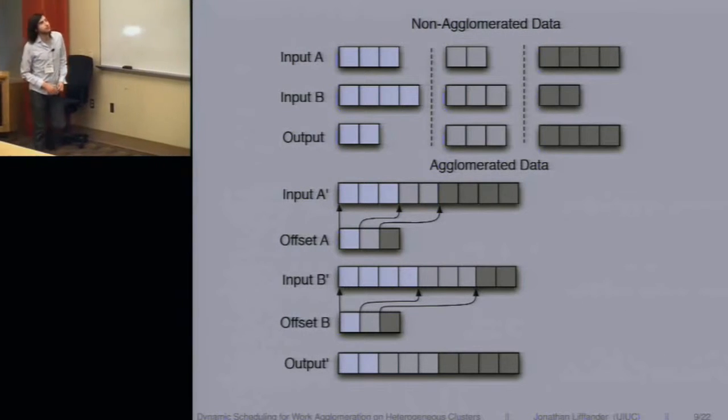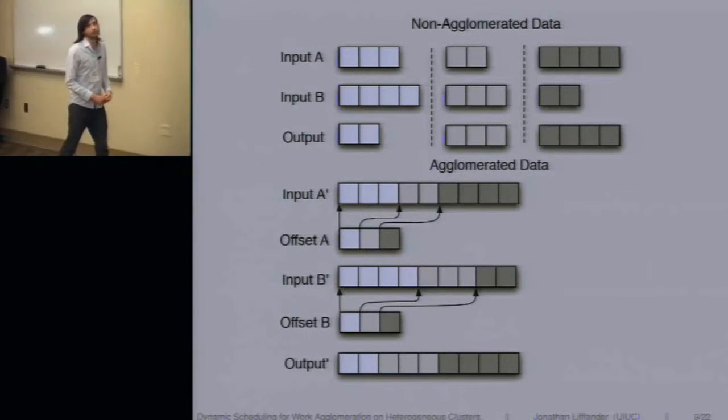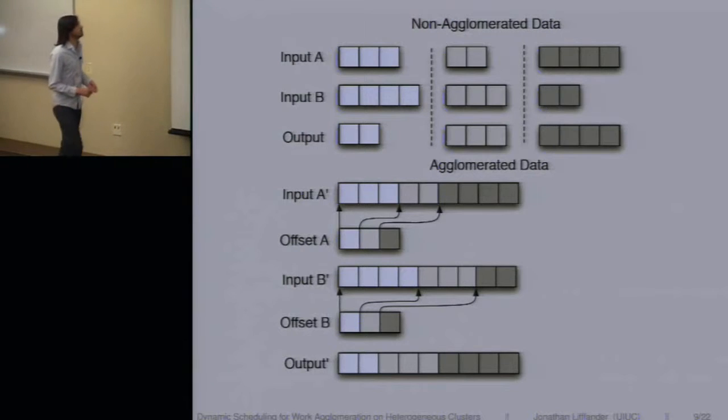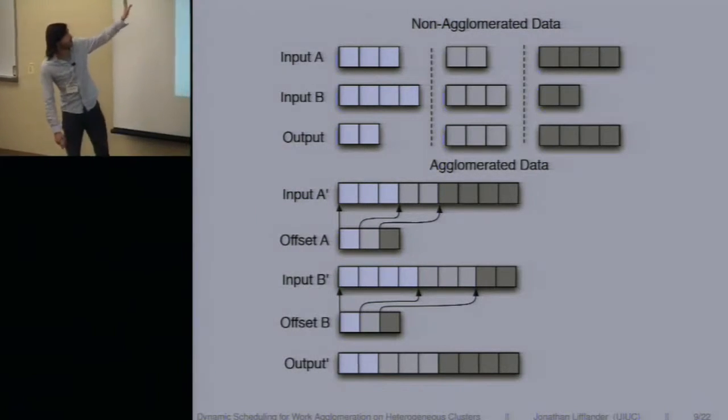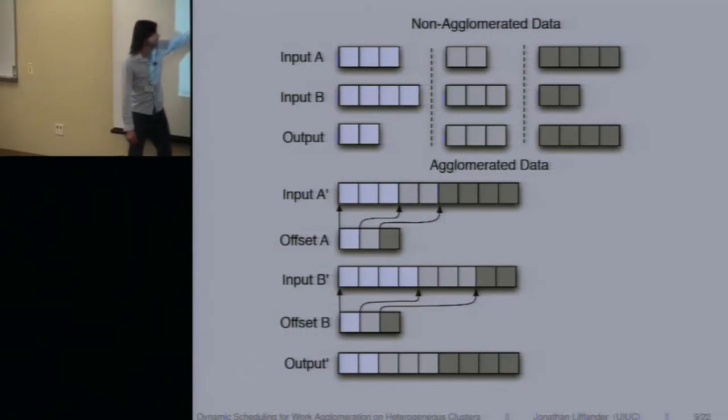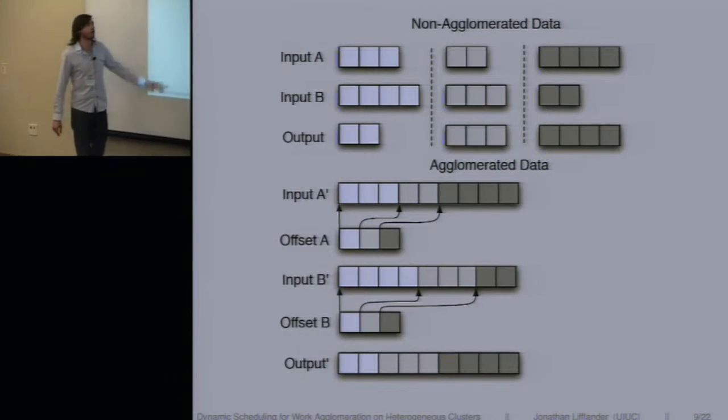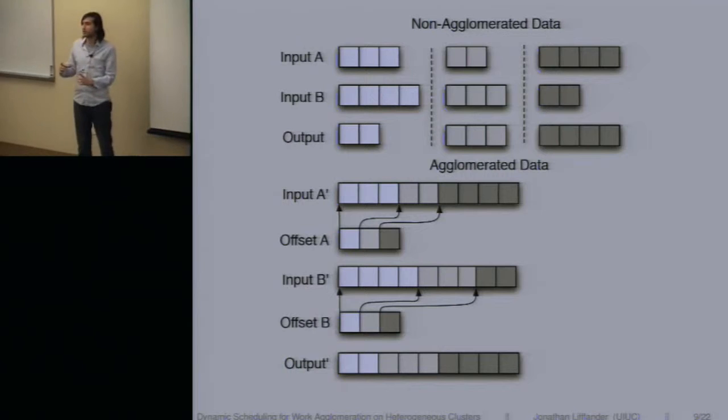And so the inputs look like this. If we have some chunk of work, some task that requires two inputs, we have some variable size inputs and an output. The agglomerated data is in these continuous buffers and the offset arrays point into these at various points. So the agglomerated kernel can access the appropriate portion and do the appropriate work based on that offset.